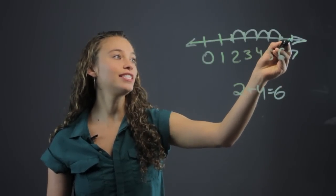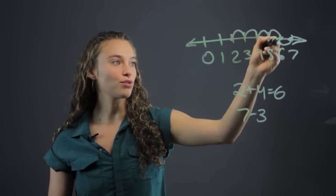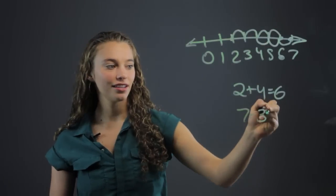Same with if they have 7 minus 3, they can start off at the 7 and subtract 3 to get 4.